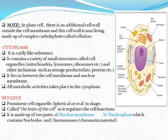Note: in plant cells, there is an additional cell wall outside the cell membrane. This cell wall is non-living, made up of a complex carbohydrate called cellulose.